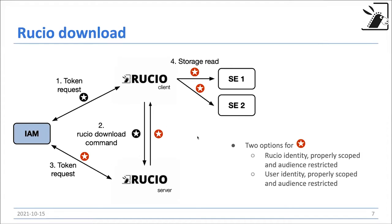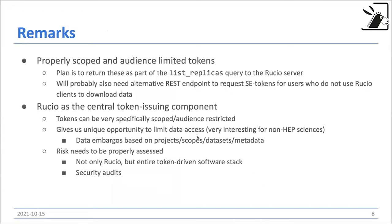This token does not necessarily need to be under Rucio's identity — it could also be the user's identity, which might be beneficial for traceability, but this is something which should be discussed. The plan is to return these properly scoped and audience-limited tokens directly in the list replicas query, where the different possible replicas with their paths, protocols, and storage elements are returned to the Rucio client — the tokens would be right away part of this query. We'll probably also need an alternative REST endpoint for users who do not directly use the Rucio clients but still want to interact with storage.